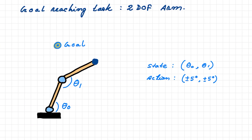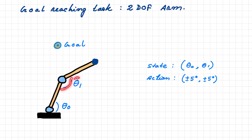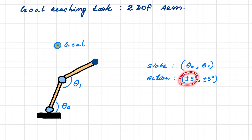Let's try this algorithm on a simulated robotic arm. This is a planar robotic arm with two degrees of freedom. For each degree of freedom we define the joint angles theta — these two angles form the state of the robot. Since this is a kinematic arm, we ignore inertia and the state is fully defined by the joint angles. The actions are plus or minus five degrees at each joint, giving four possible actions per time step.